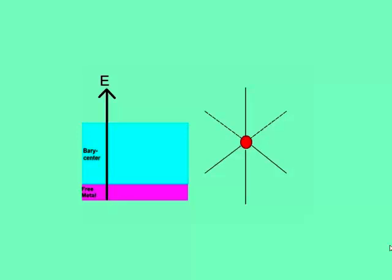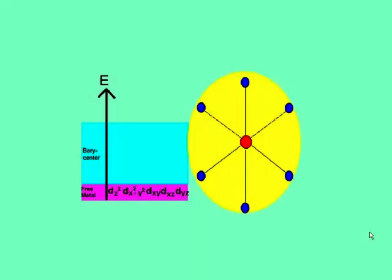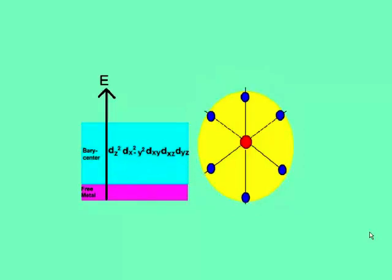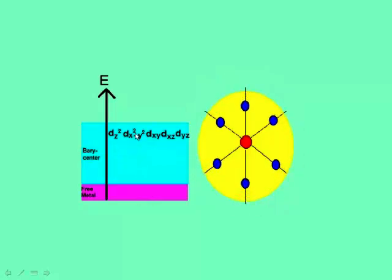Now let us compare the energies of the d orbitals of the free metal ion and the d orbitals at the barycenter. Remember we said that the d orbitals of the free metal ion are degenerate. A spherical field results when the negatively charged ligands surround the metal. As the ligands get closer to the metal, that sphere is contracting towards the metal — getting smaller but also more intense. The electrons in the orbitals will be repelled by this negative field, and this repulsion will cause the energy of the orbitals to rise, but rise equally. So at the barycenter, the orbitals are high in energy but still degenerate.